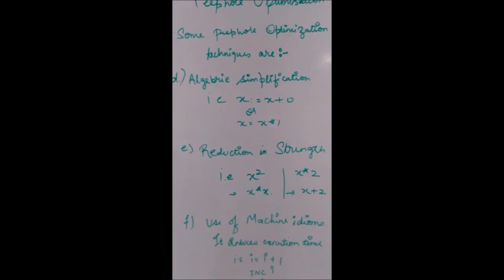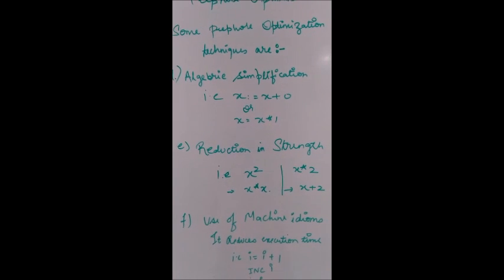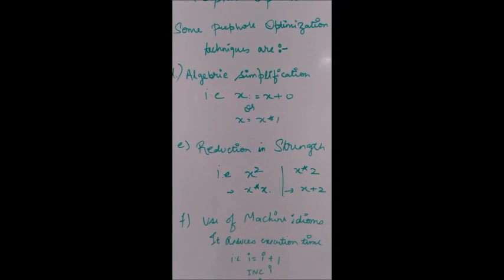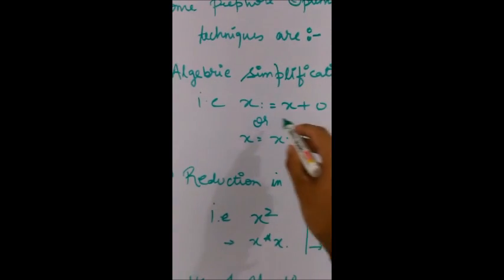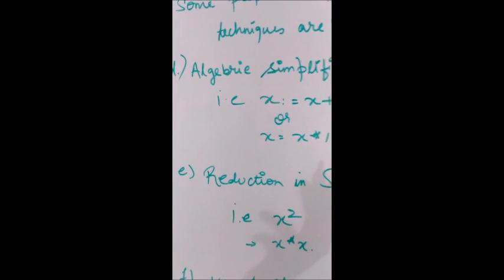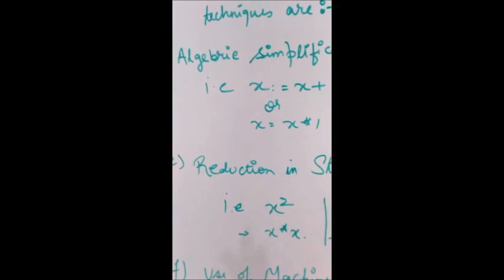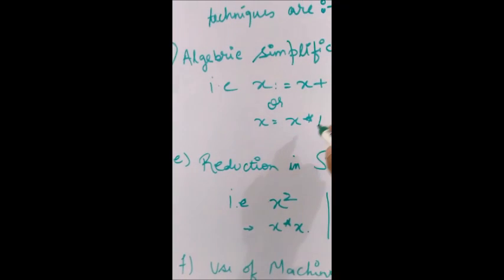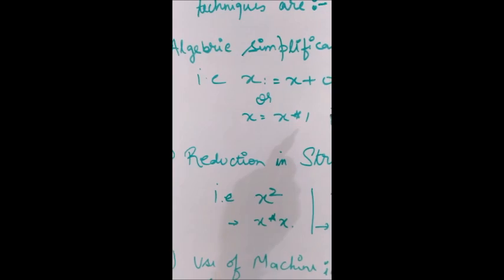The next technique is algebraic simplification, where we use algebraic properties to reduce the code. For instance, 'x = x + 0' makes no sense — adding 0 to a variable gives the variable itself, so we can eliminate this. Similarly, multiplying by 1 is also redundant and can be eliminated.